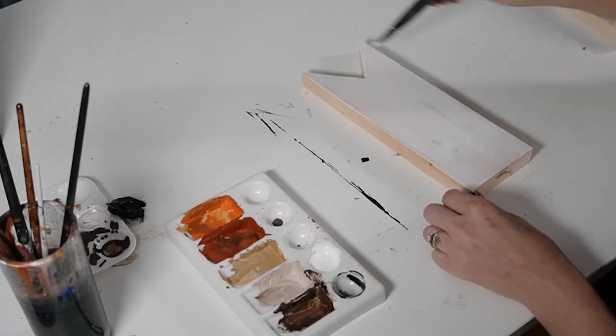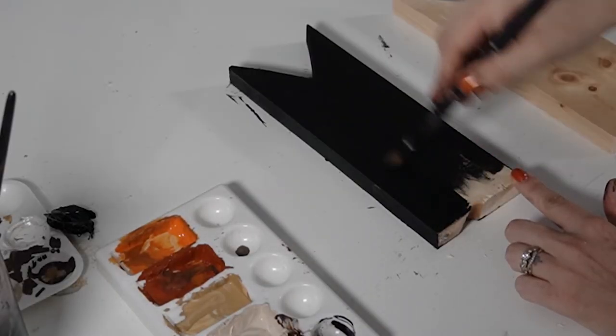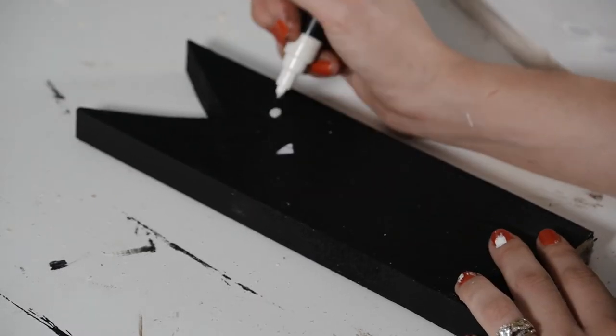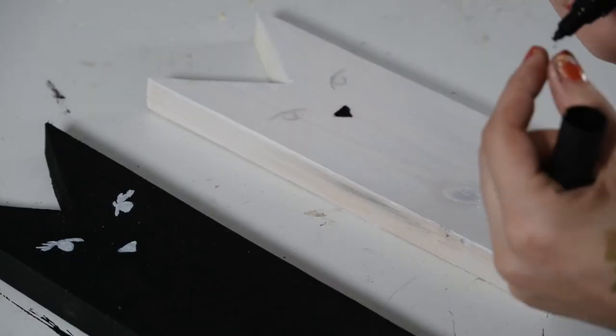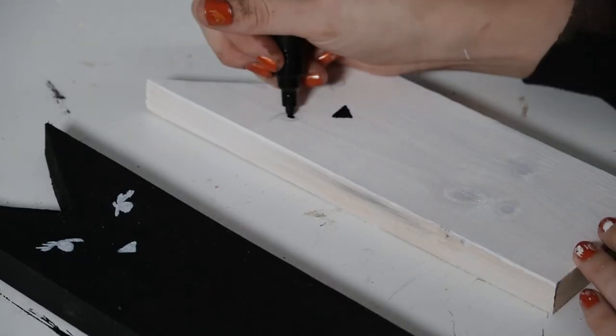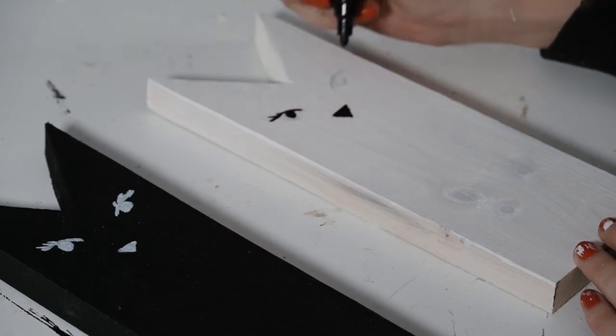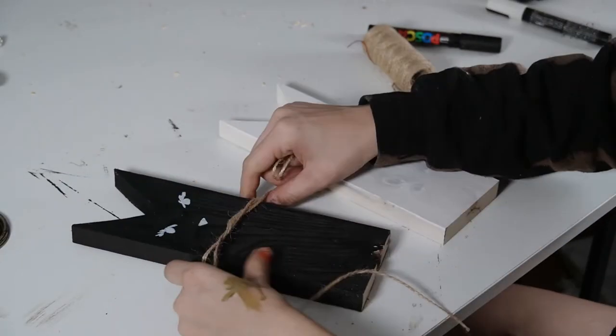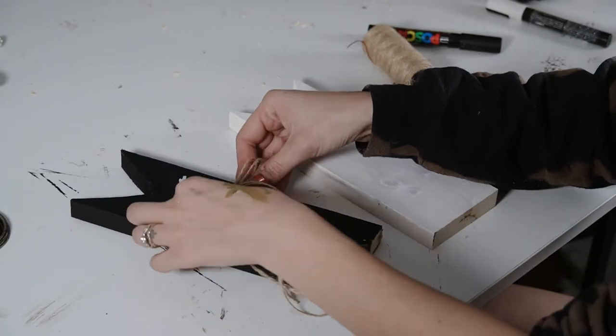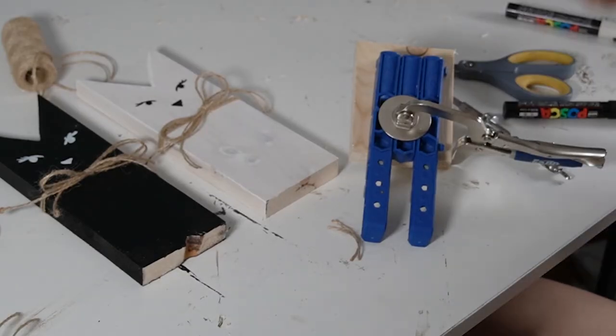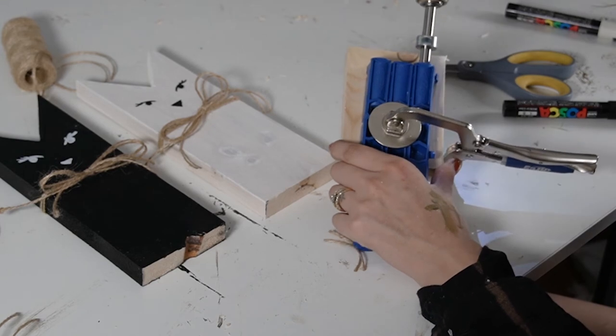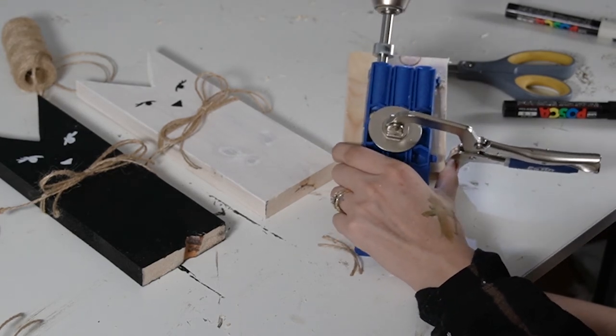I then painted one of those pieces white and the other one black. And then using my white Posca paint marker, I added a face to the black cat. And using my black Posca paint marker, I added a face to the white cat. To finish off these cats, I took two pieces of twine and tied that in a bow around each one.